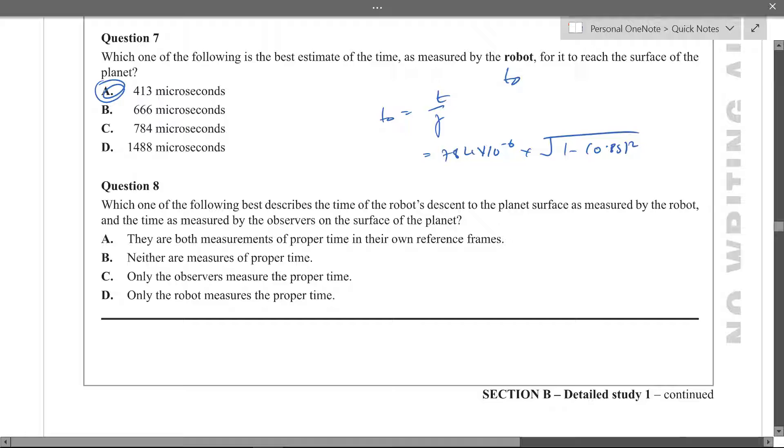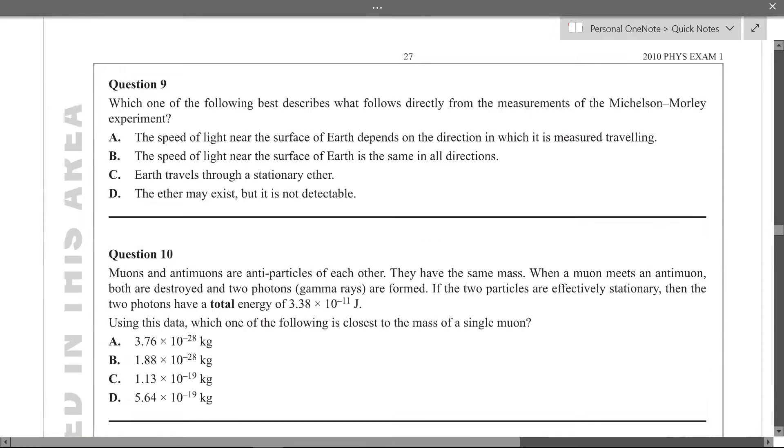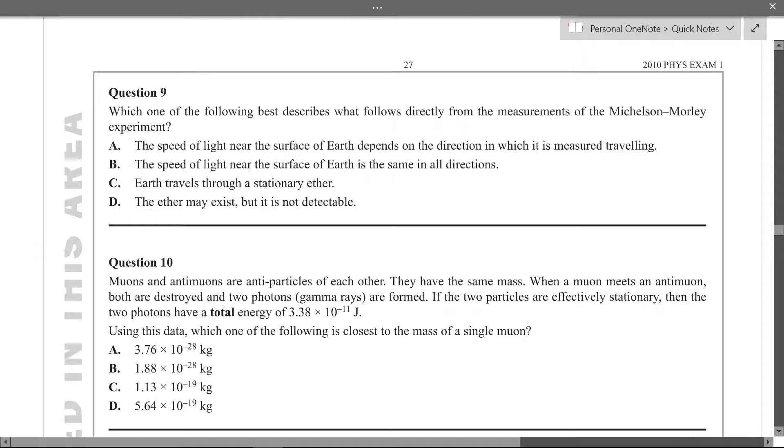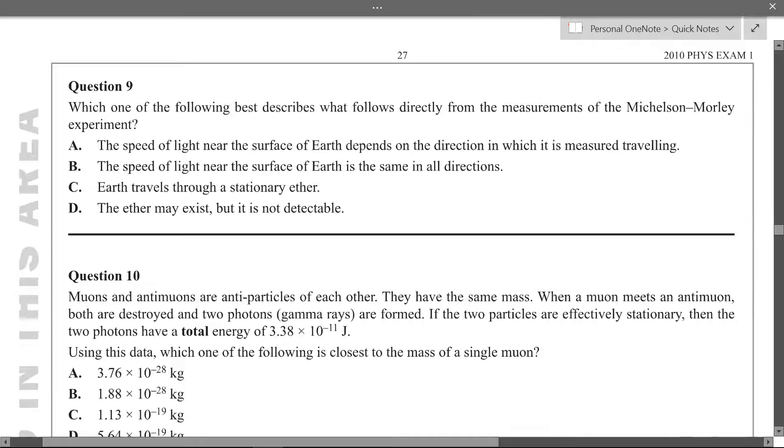So they're both measurements of proper time, it's not true because only the robot's at rest compared to its movement. Neither measures a proper time, no the robot's is so we can, we don't really have to go through them, we know d is the answer. So which of the following describes what follows directly from the measurements of the Michelson-Morley experiment? What that was measuring was like whether the ether exists and they did that by measuring light at different orientations at different types of the year. So speed of light on the earth depends on the direction in which it's measured traveling, that's not what it found. That's what they thought it was going to do but it's not what it did. The speed of light near the surface is the same, that is what happened.